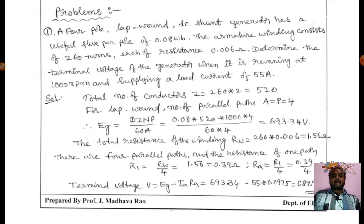So Eg we got. The total resistance of the winding Rw = 260 × 0.006. There are 4 parallel paths, and the resistance of each parallel path equals the total resistance divided by 4. Rw = 1.56 ohms.